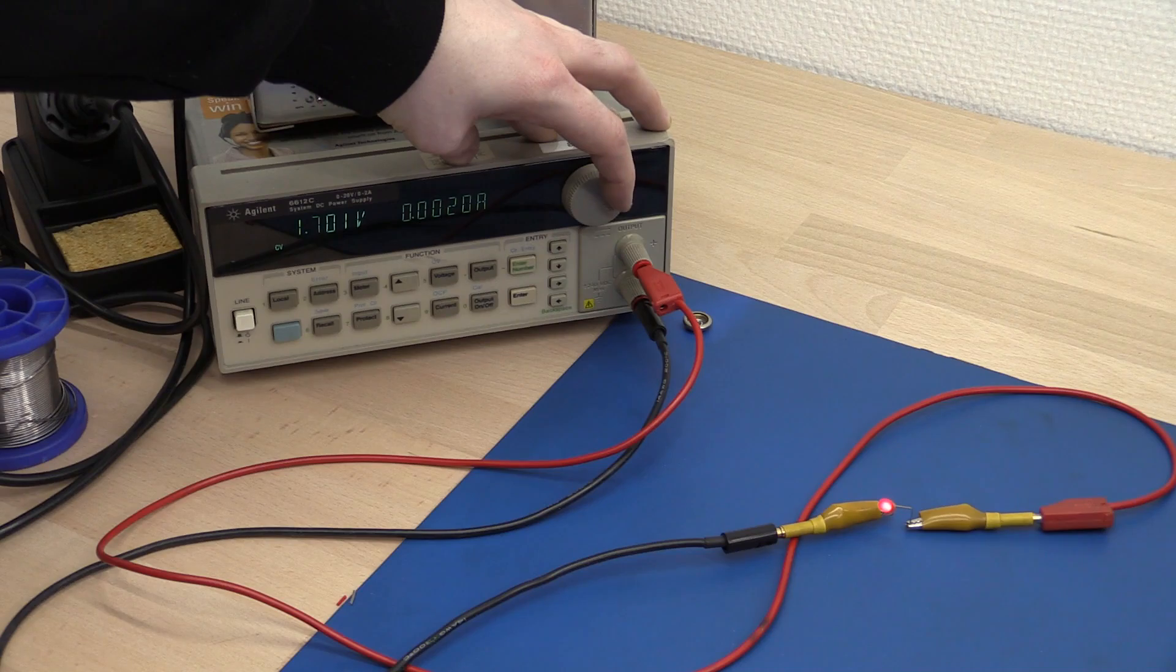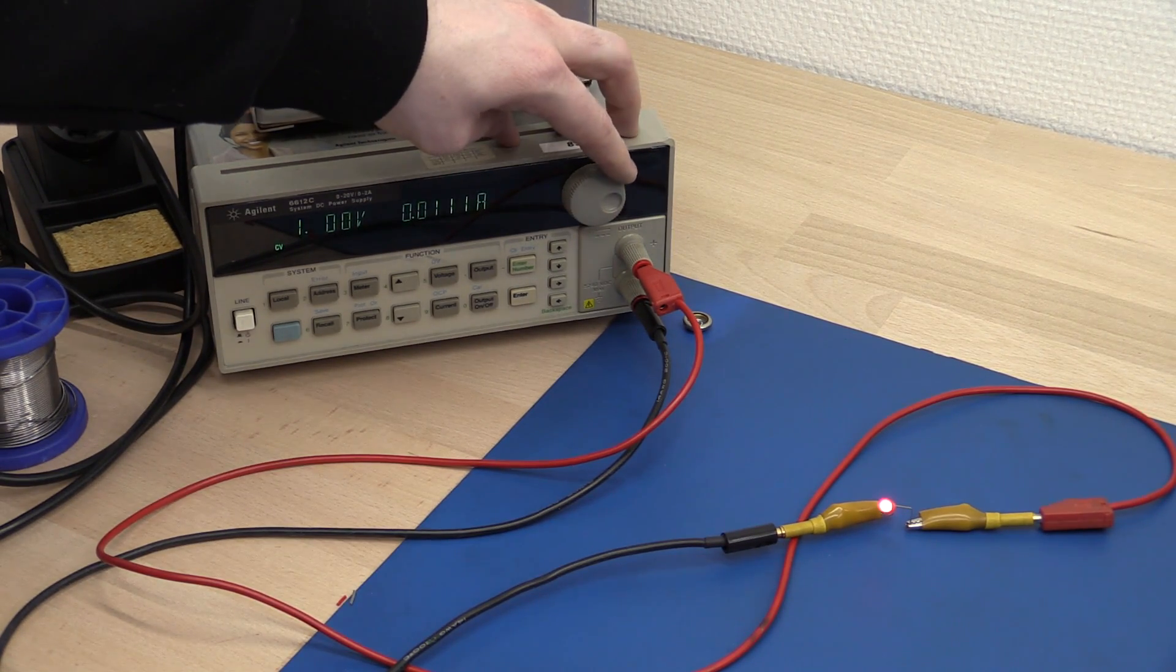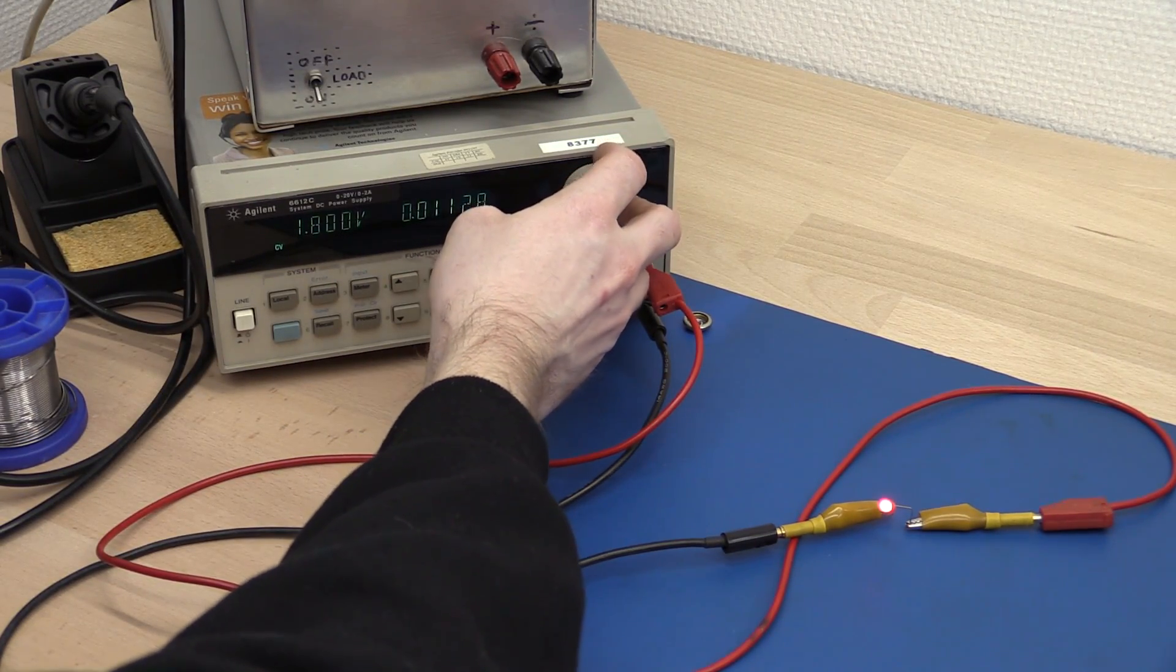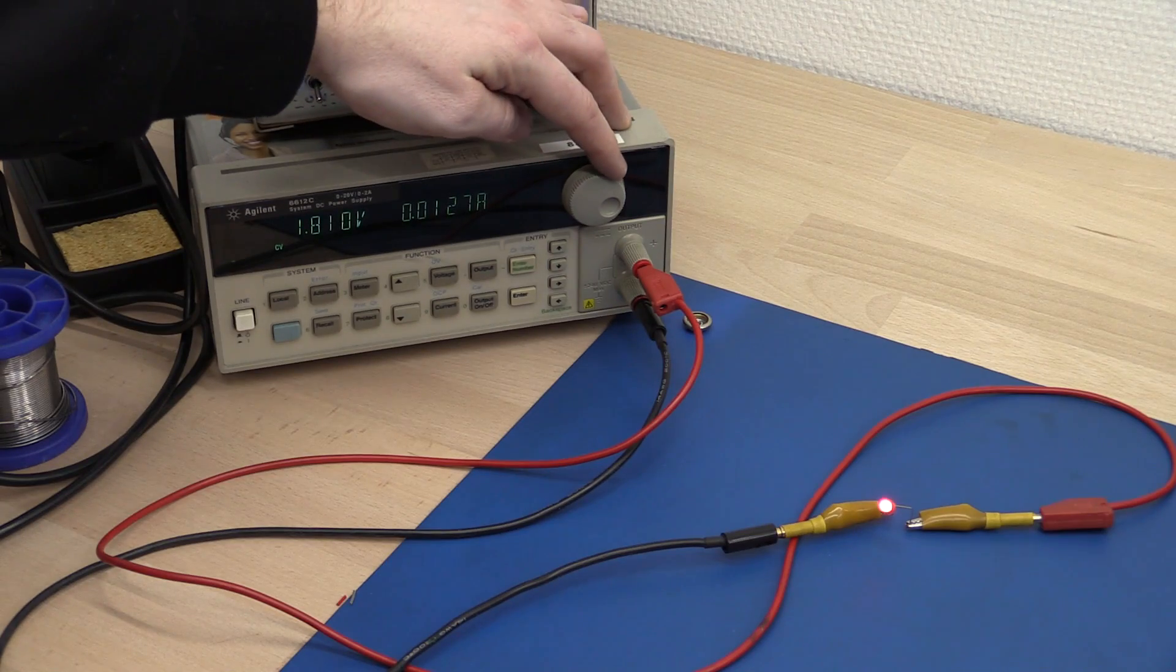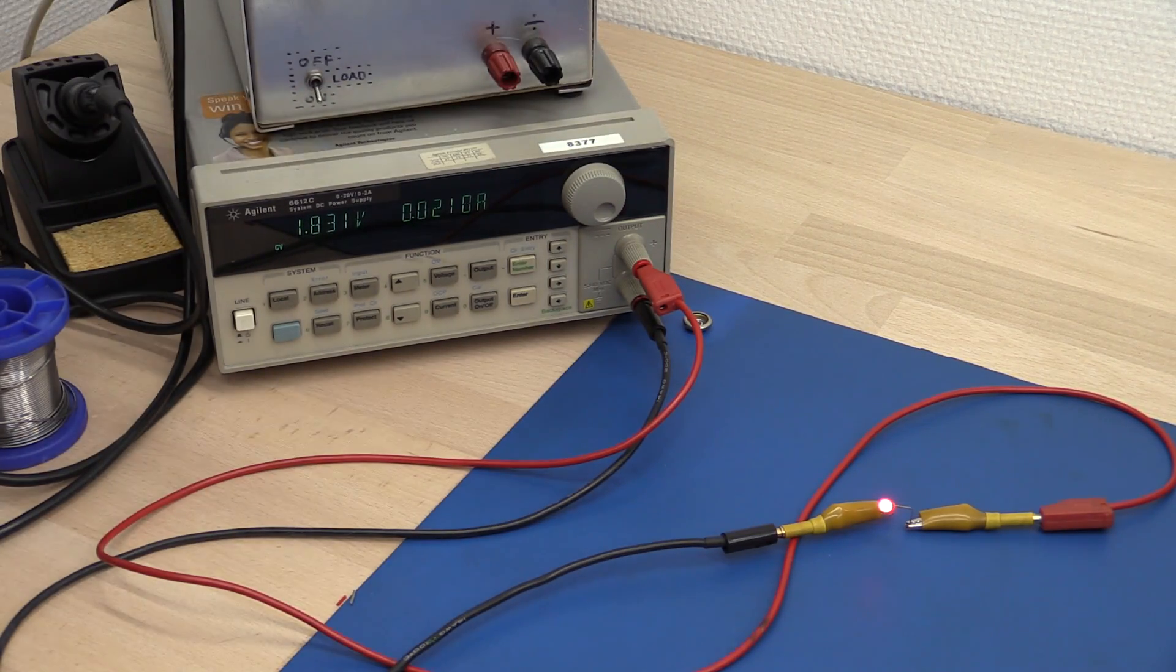1.8 volts, we have 10 milliamps. Let's go up in smaller steps. Say I want 20 milliamps, that's the maximum for this LED. And here we go.